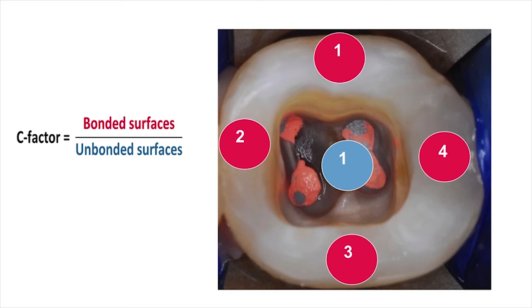When filling an endodontic access cavity with composite resin we are dealing with a very high C-factor configuration where the shrinkage stress will be very high. The C-factor is determined by dividing the number of unbonded surfaces into the number of bonded surfaces, as you can see on this slide. In most endodontic access cavities we will have a C-factor of 4 when we do the calculation.